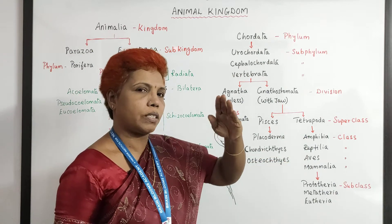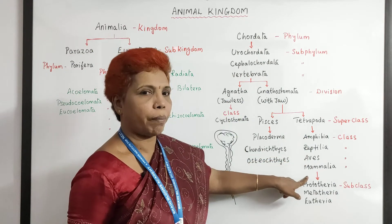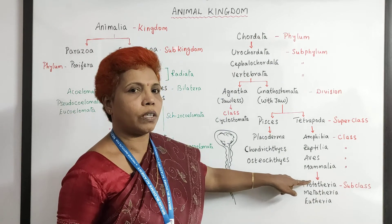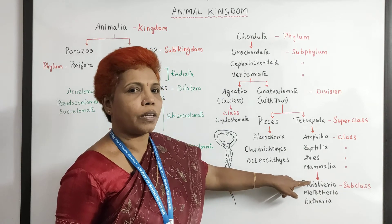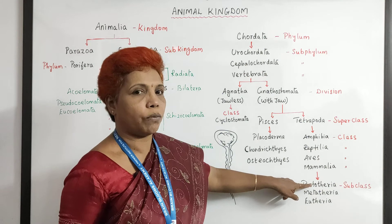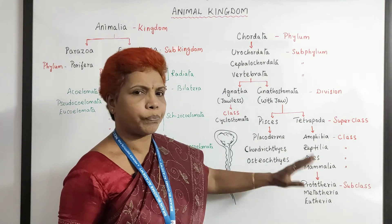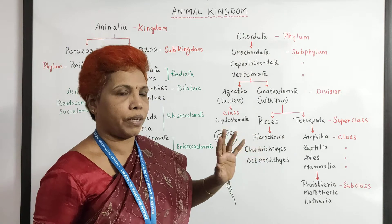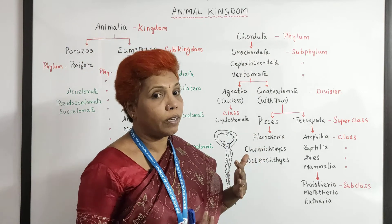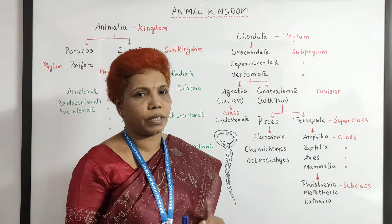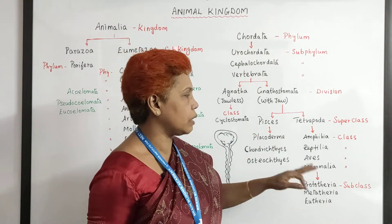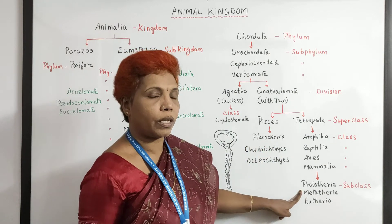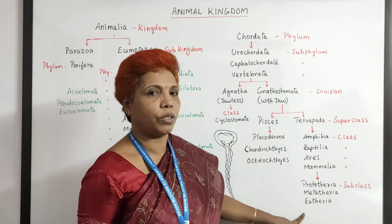Then it starts flying — Aves. And Mammalia: the mammary gland is present, lobe is present, they give birth to young ones — viviparous — and they are sexually dimorphic. Mammalia is a highly developed category with three subclasses: Prototheria, Metatheria, and Eutheria.